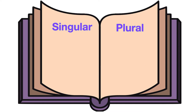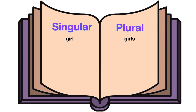Examples of singular and plural. Girl — Girls. Apple — Apples. Dog — Dogs.